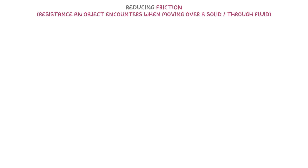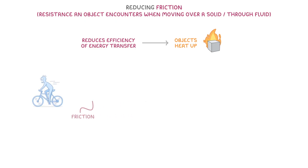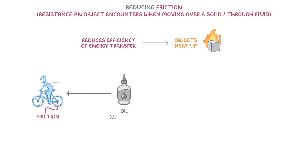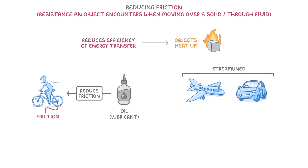The last thing we need to look at is how to reduce friction, which is the resistance that an object encounters when moving over a solid or through a fluid. The problem with friction is that it reduces the efficiency of energy transfer and can cause objects to heat up. For example, the friction between the cogs and chain of a bicycle makes it harder to pedal, but by adding oil, which is a type of lubricant, we can reduce that friction and make cycling easier. Meanwhile, making cars and planes streamlined reduces the friction from air resistance, which allows them to use less fuel and makes them more efficient.